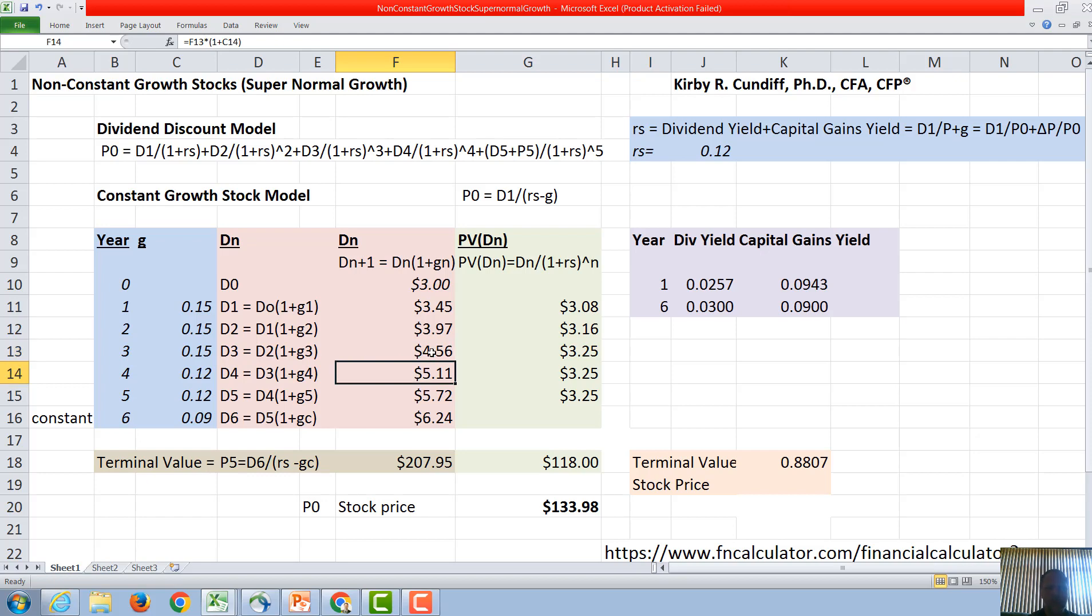In the following year we take 4.56 times 1.12, now a slowing growth rate, and get 5.11. The year after that we get 5.11 times 1.12 and get 5.72, and then we get a constant growth rate of 9%, so we get 5.72 times 1.09 or 6.25. We now have dividend D1, D2, D3, D4, D5, and also dividend D6 that we will use here to calculate the terminal value.